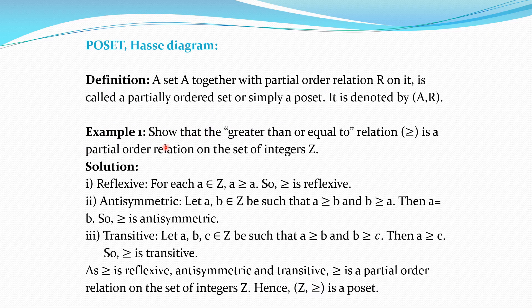We have already defined what is the meaning of partial order relation on some set A. Partial order relation is a relation which is reflexive, antisymmetric and transitive. We define poset, that is partially ordered set. A set A together with partial order relation R on it is called a partially ordered set, or simply a poset — taking P of partially, O of ordered, and set.